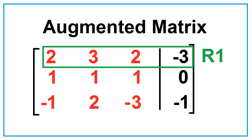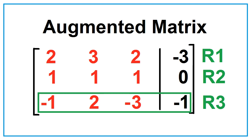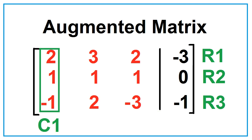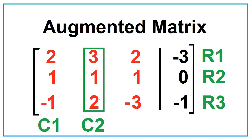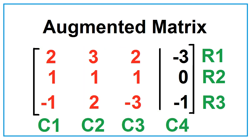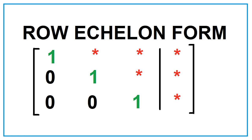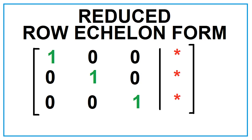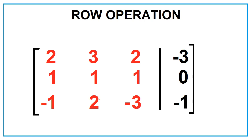This is row 1, row 2, row 3, column 1, column 2, column 3, and column 4. Our objective is to reduce this matrix to row echelon form and eventually to reduced row echelon form using these row operations.